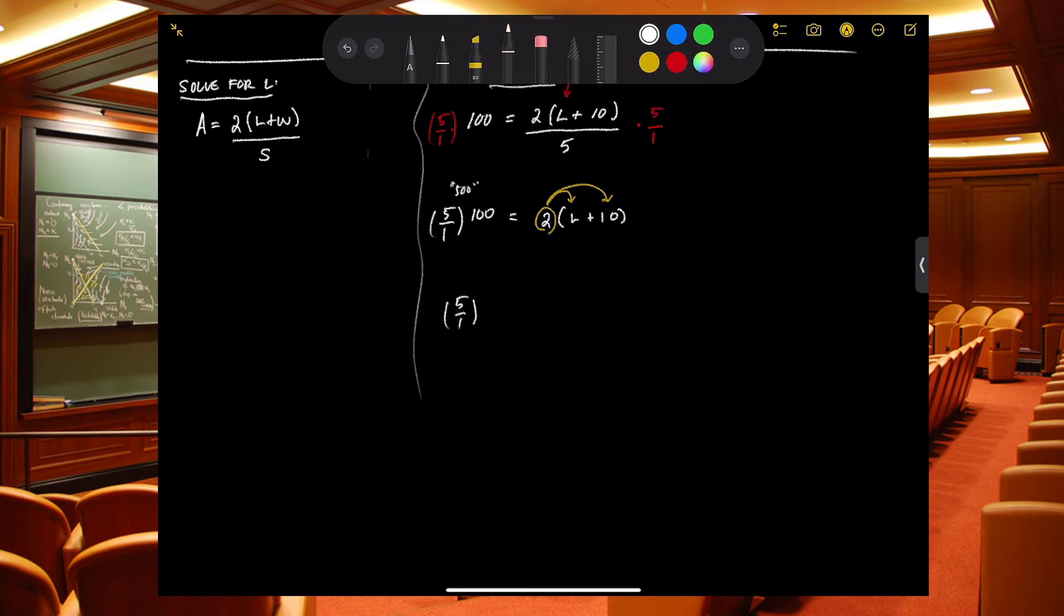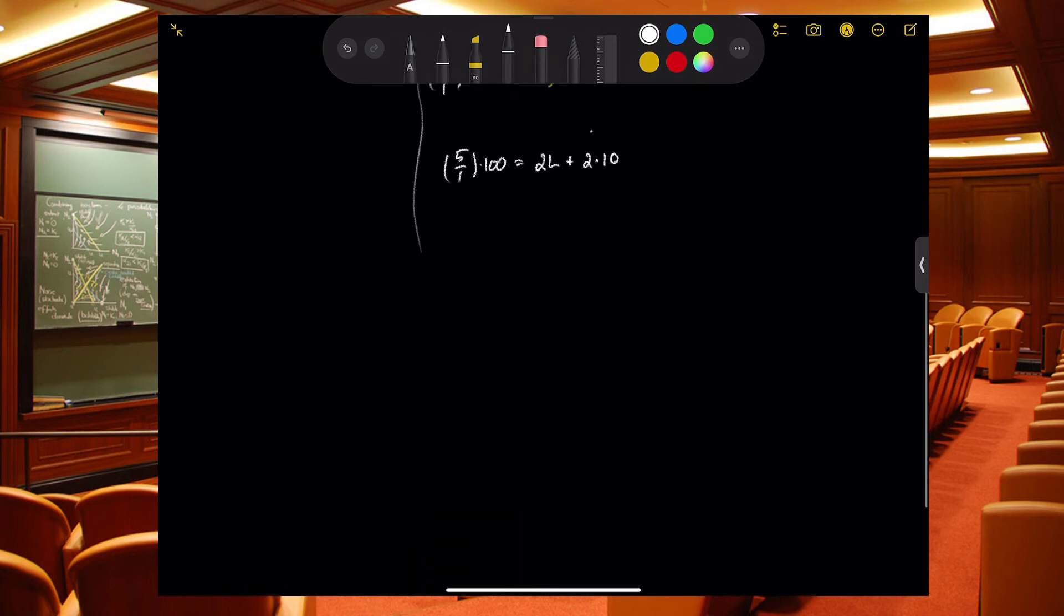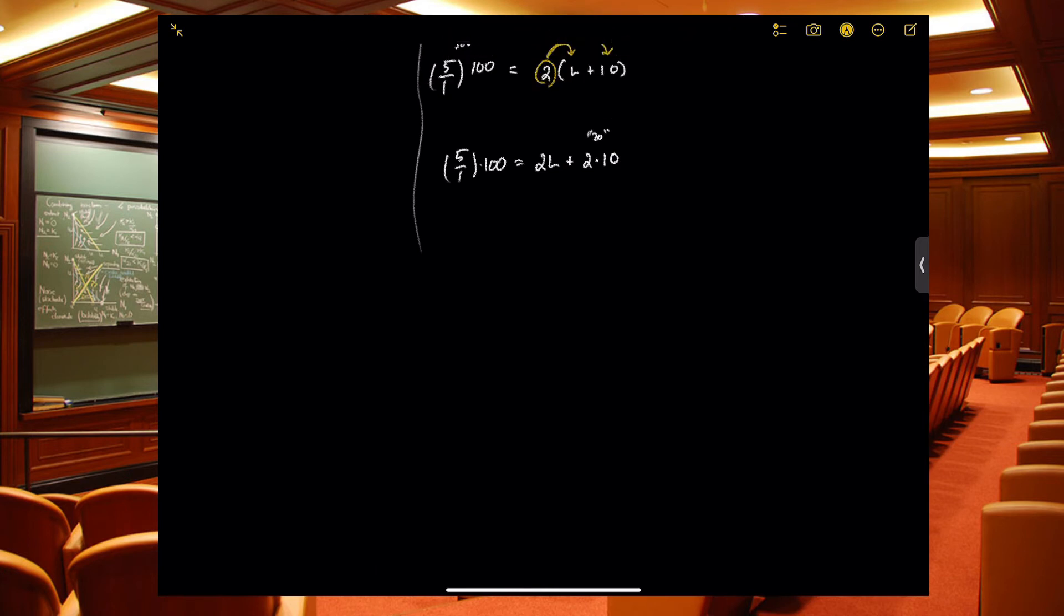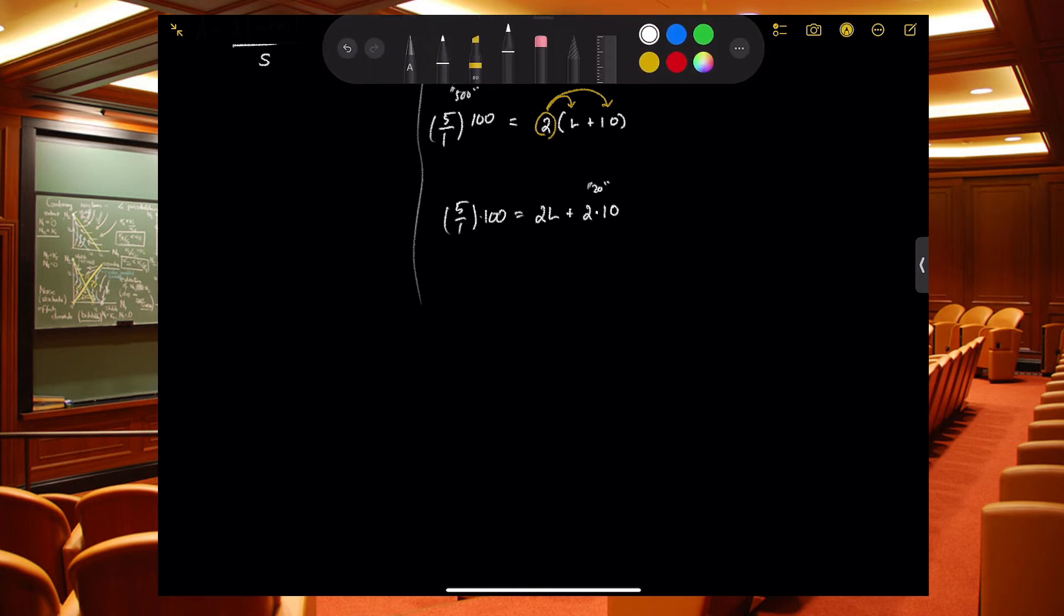We've got 5 over 1 times 100 equals 2 times L plus 2 times 10, which we know is 20. And then if this were 20, what would I do to get rid of that 20 on the right hand side? I'd subtract the 20, so I'm going to subtract the 2 times 10 from both sides. So I get 5 times 100 minus 2 times 10 equals 2 times L. And then I will divide both sides by 2 or multiply both sides by a half.